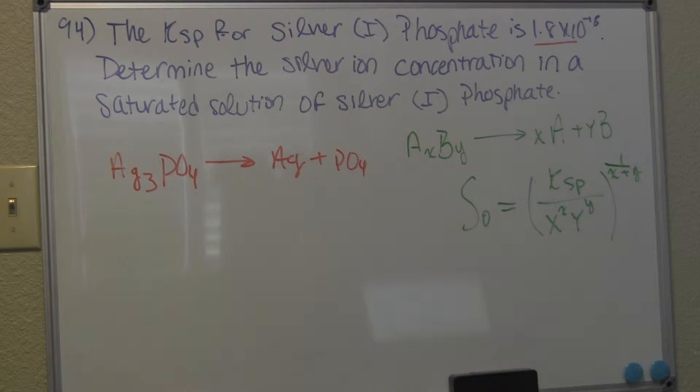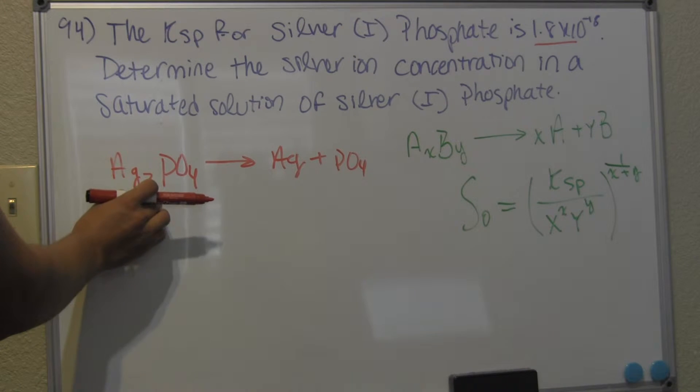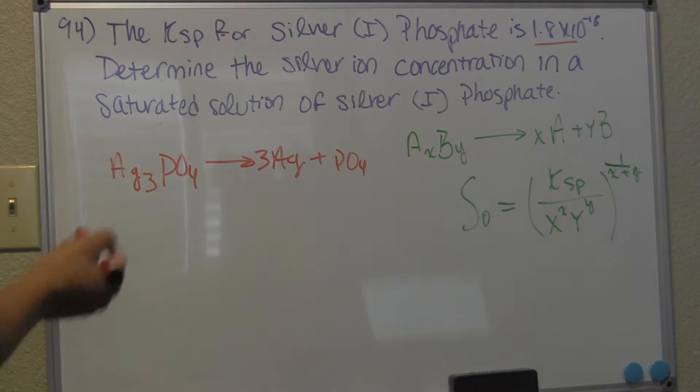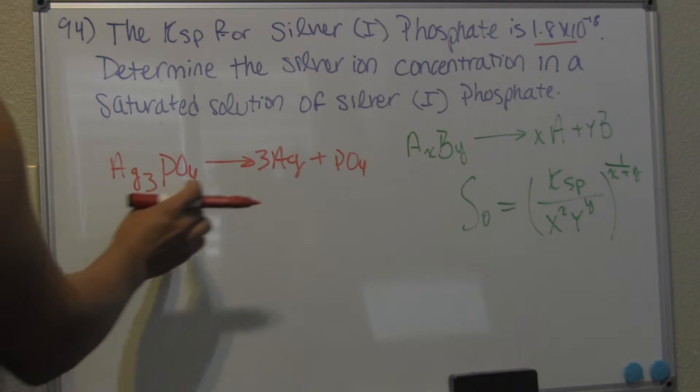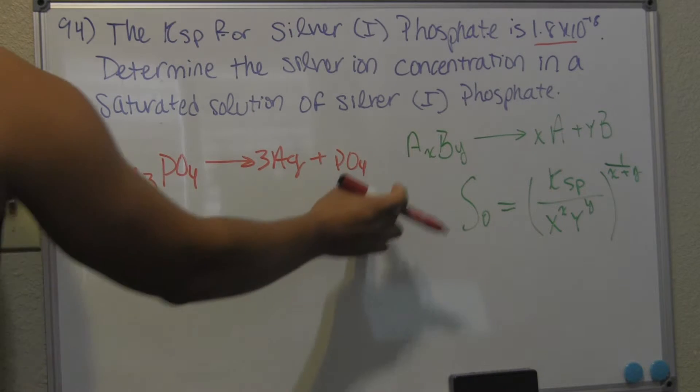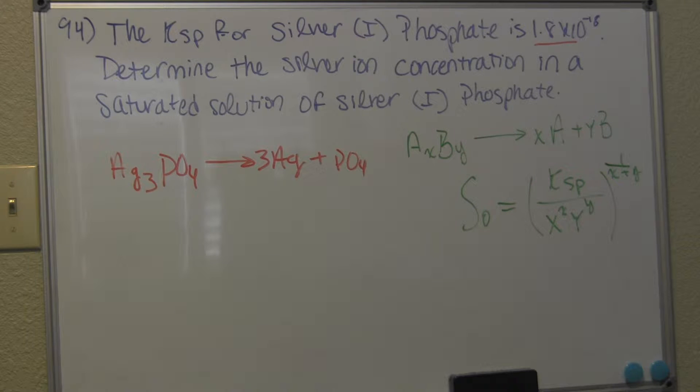Now we need to balance this reaction. We see here that we have three silvers, while we only have one on this side. So we have to put that 3 right there. And we have this phosphate, which it's only one phosphate, and we have one phosphate on that side. So we're all good.